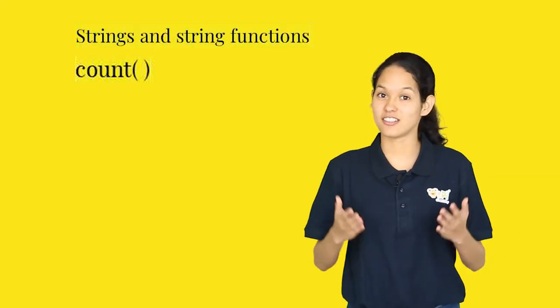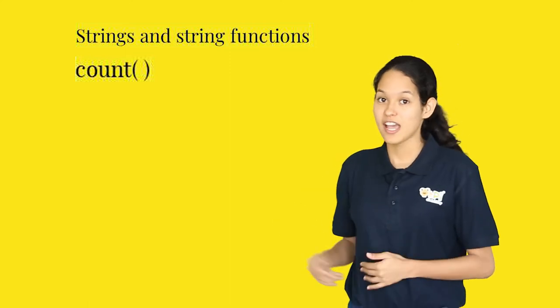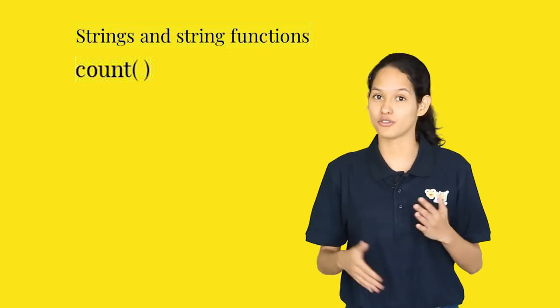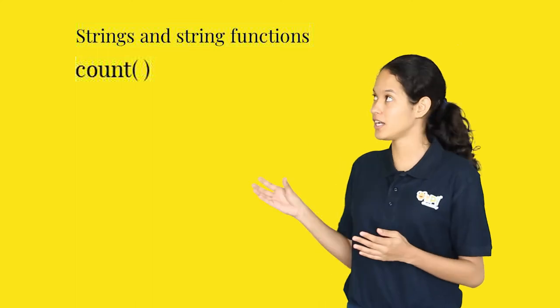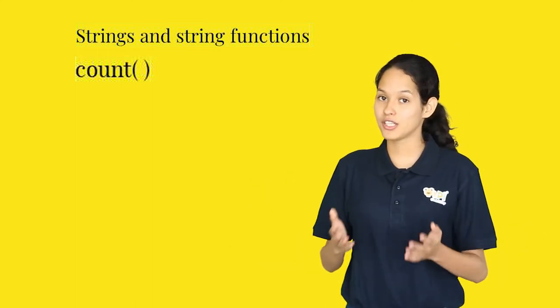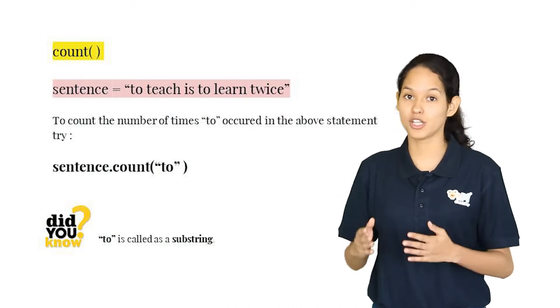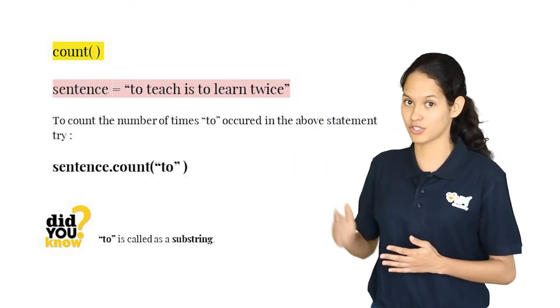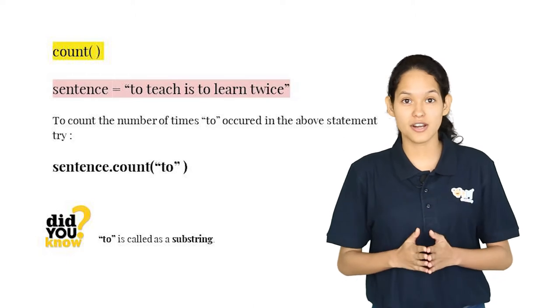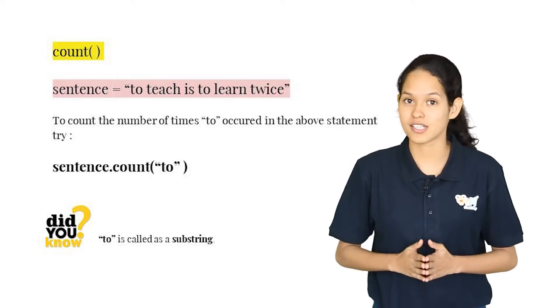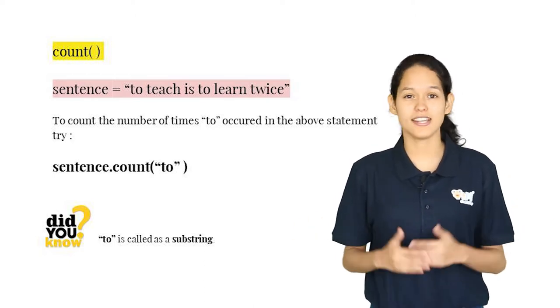Now let's take a look at another string function count. It allows you to count the number of occurrences of a particular word or a character in a string. We can use this command to find out how many times the word two occurs in this above string. You can check it out and tell me what output you get. The output is usually an integer value.